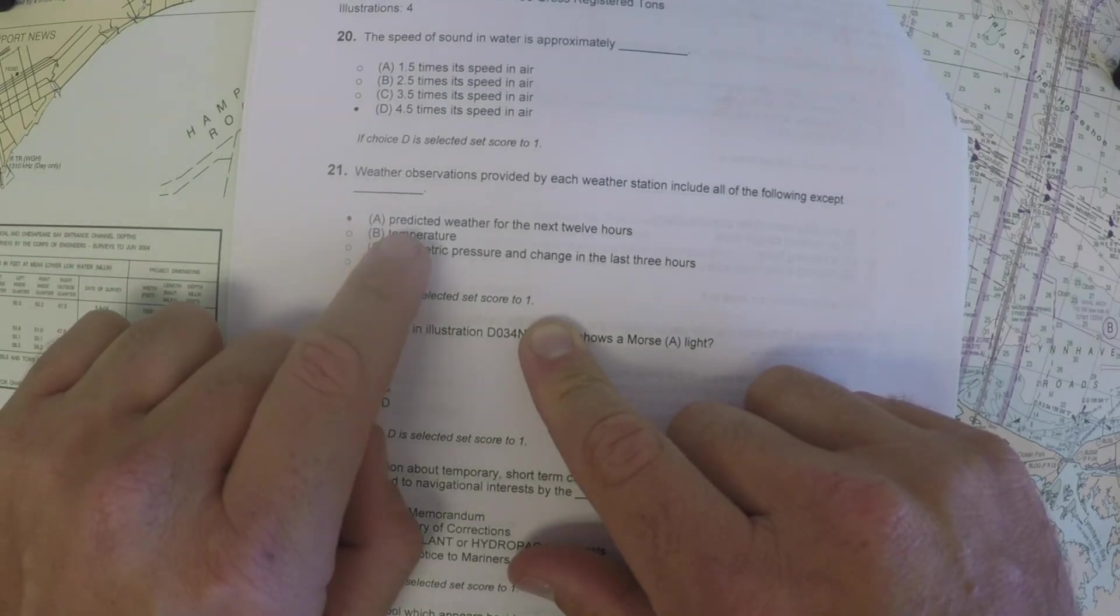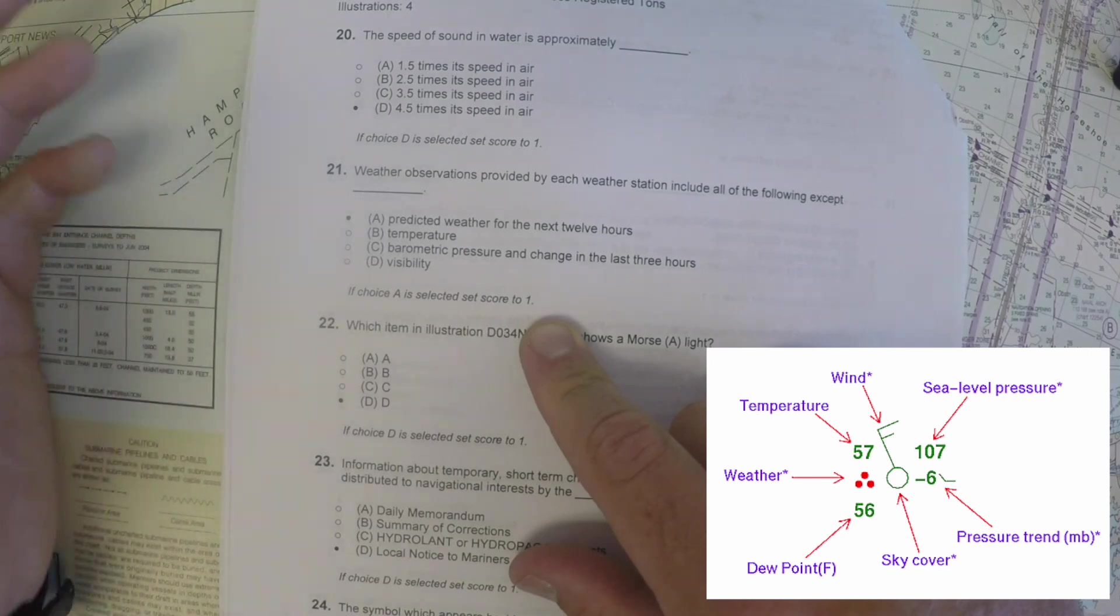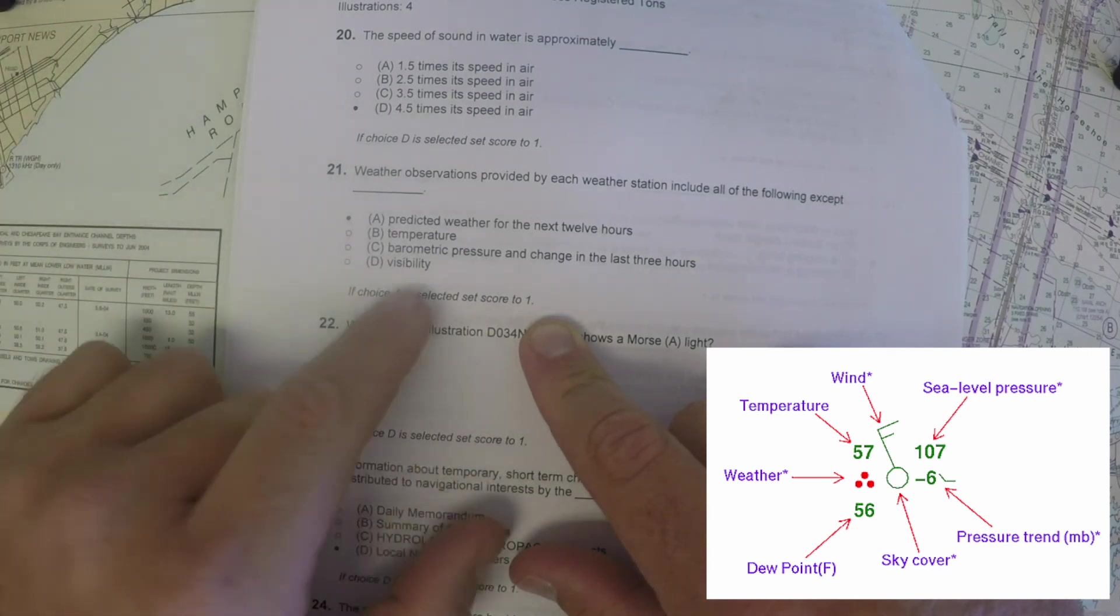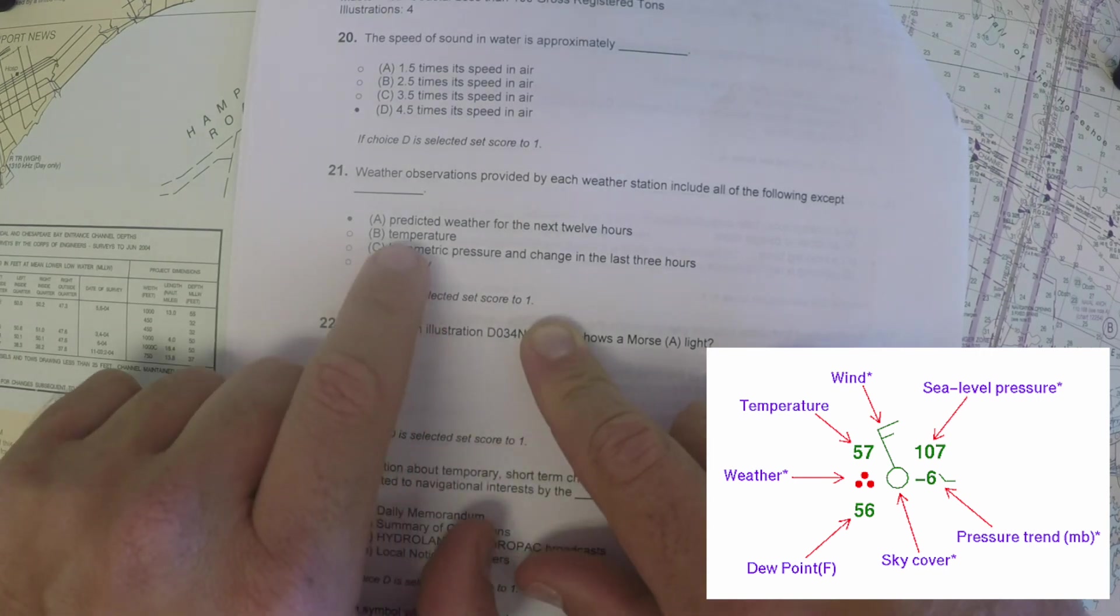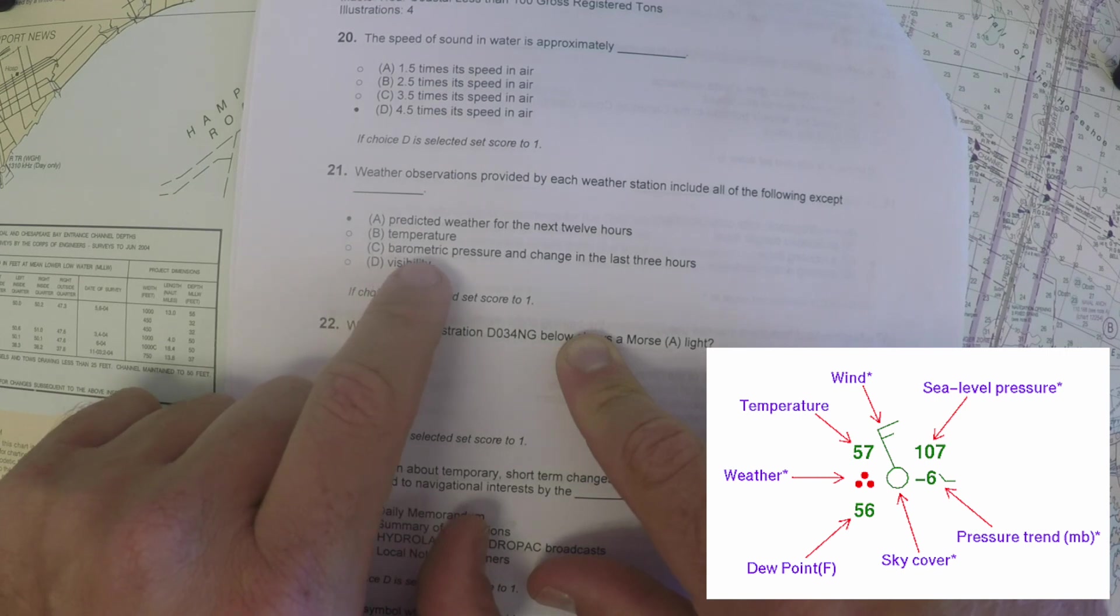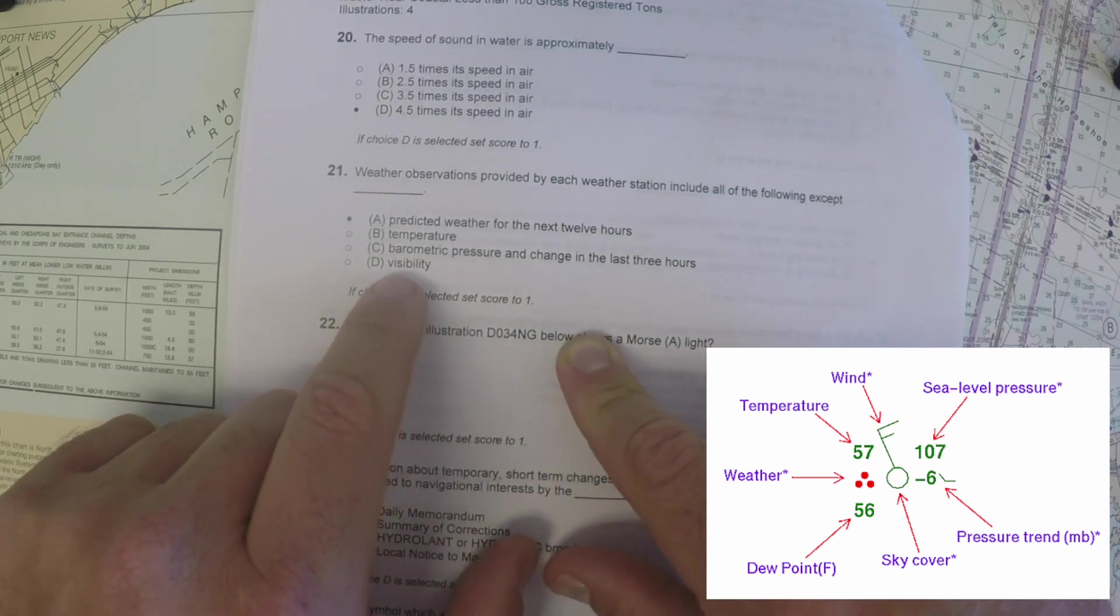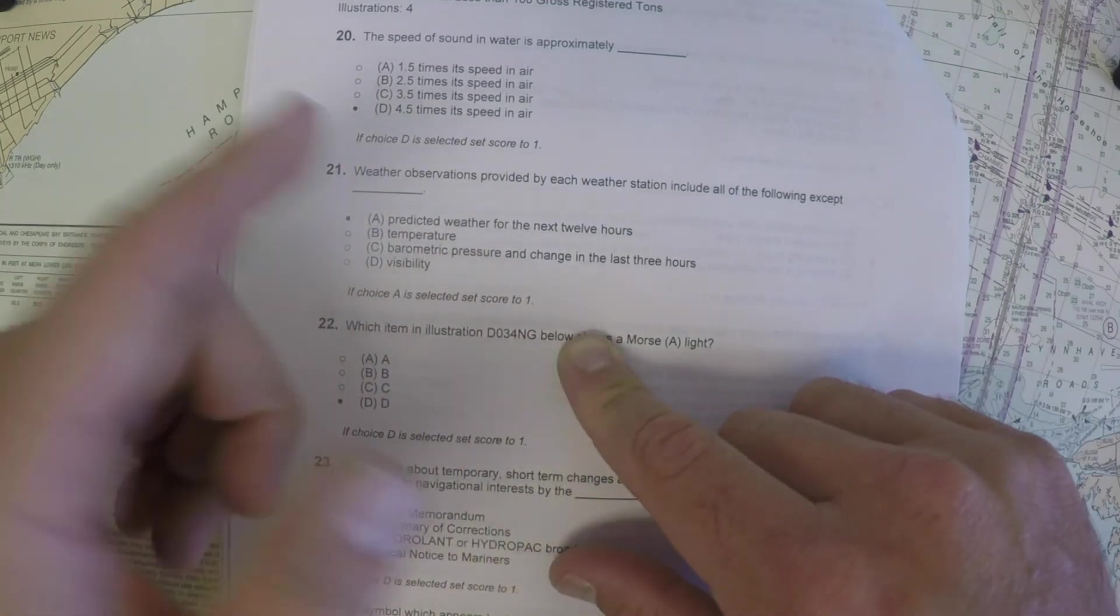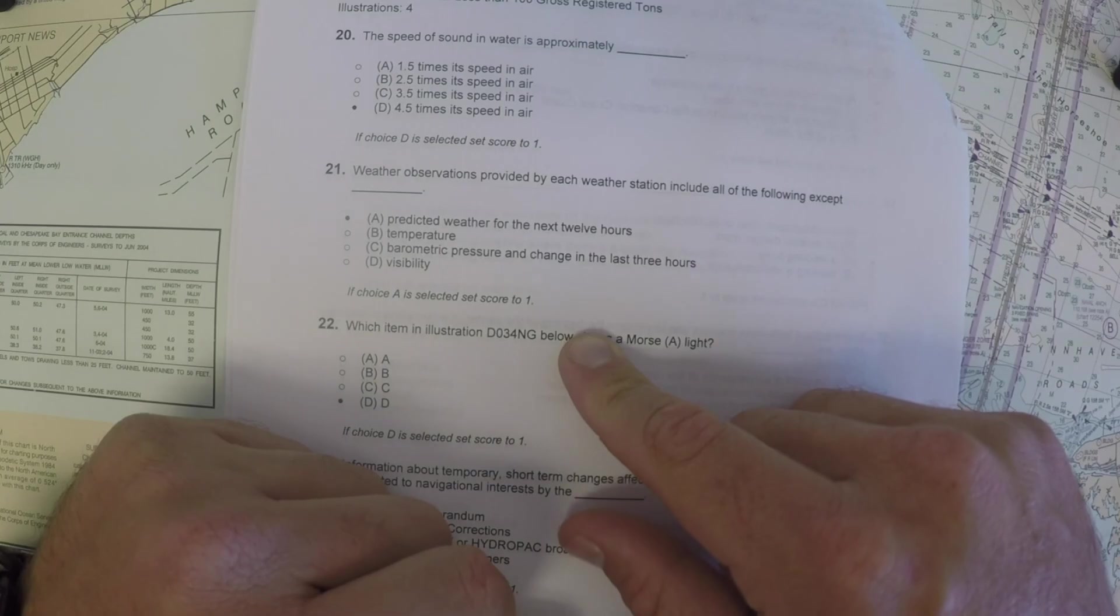So weather observations are put out by each weather station. They generally don't predict the future. So it takes a forecaster to do that. So you see weather forecasts all the time, but the observations provided by a weather station are all stuff that's happened in the past or is happening right now. So temperature is a present phenomenon. Barometric pressure is a present phenomenon or a trend. Visibility is a present phenomenon. And then predicted weather is not issued by the weather station that's issued by a forecasting office or a meteorologist.